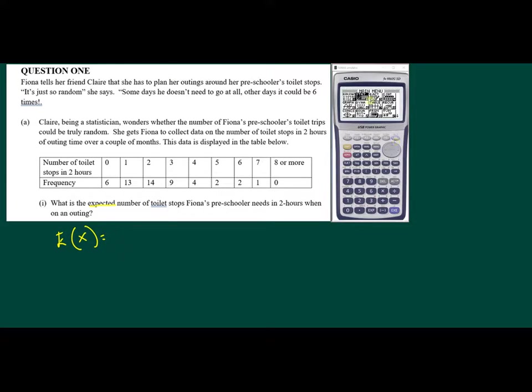So on our graphics calculator, we're on the stats screen on the main menu, and we press execute to go into the screen here. In list 1 and list 2, we're going to enter the data from our field of values. So first of all, in the first column, we're going to enter the number of toilet stops in two hours. So we go 0, don't forget the 0, 1, 2. We're basically entering each of these values into the calculator.